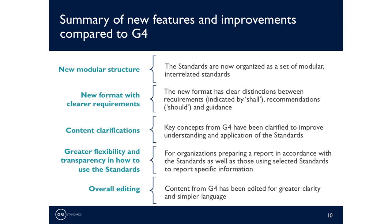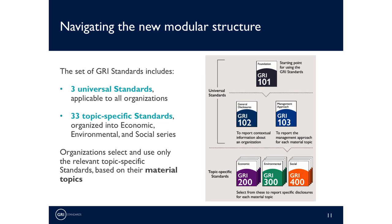Next, there are now much clearer instructions on how to use and reference the standards, both for preparing in-accordance reports as well as for those who want to use selected standards to report on a specific topic, such as biodiversity or local communities. We have also used this opportunity to carry out an overall editing review — language has been revised and duplicative content has been removed. With the new set of standards, there are three universal standards that apply to all organizations and a set of 33 topic-specific standards that each relate to a separate economic, environmental, or social topic. Organizations can select and use only those topic-specific standards that are relevant, based on their material topics, and in the future additional standards can be added to cover new topics.